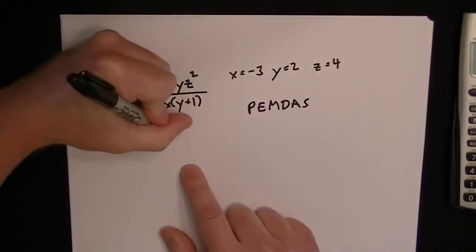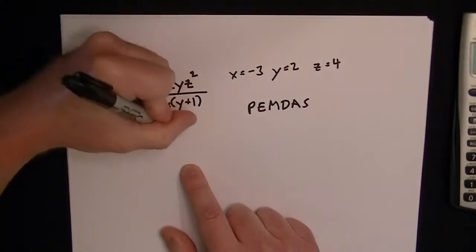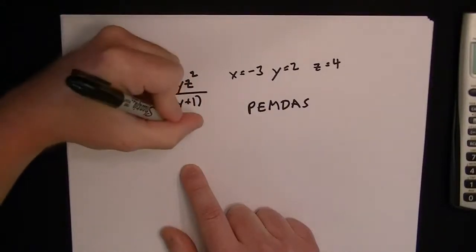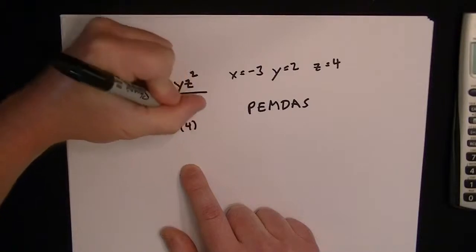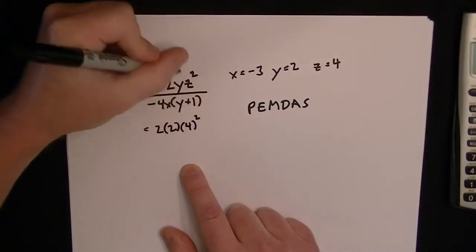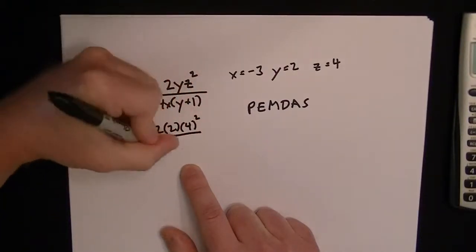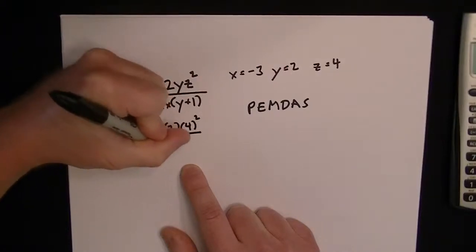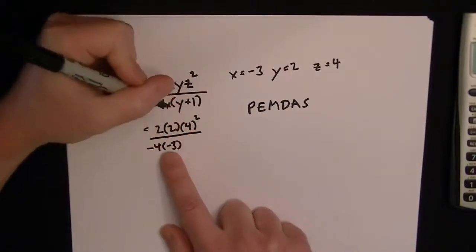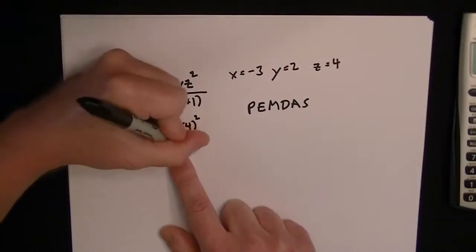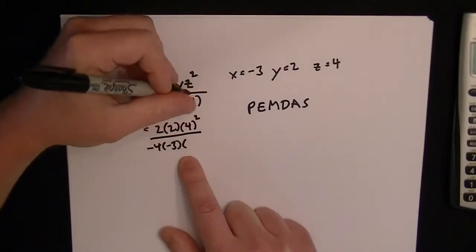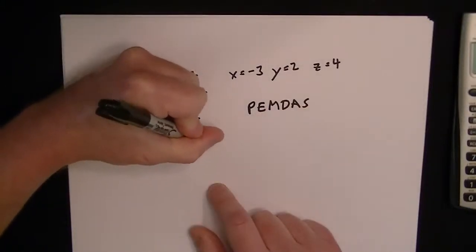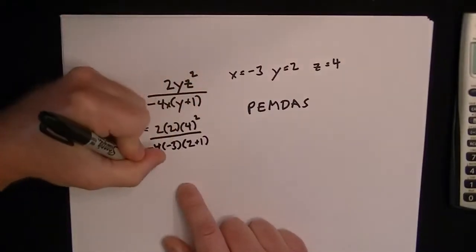So let's just plug in these values here. For the y, we have a 2. For the z, we've got 4, so that becomes 4 squared because it's z squared. It's divided by minus 4 times the x, which x is equal to minus 3. And then finally we have y plus 1, so the y is 2, so that becomes 2 plus 1.